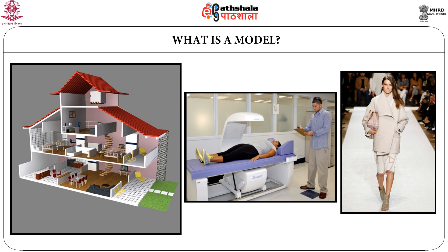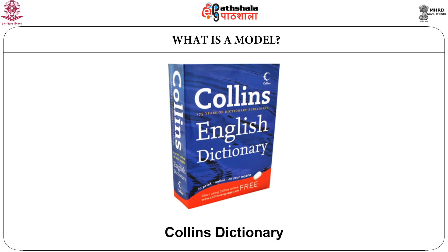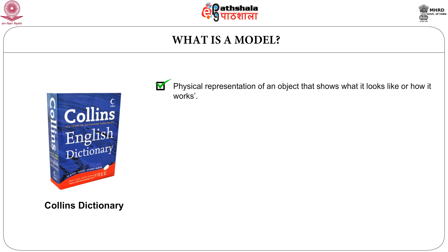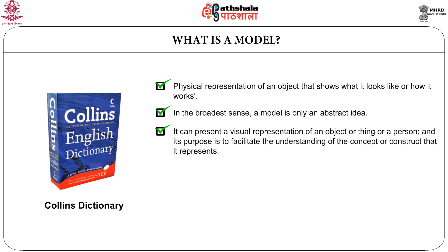Further, in a fashion show, a human model may parade on the ramp showing off different designs and creations of a fashion designer. However, we must not forget that a model is just a model — it is not the real thing. They are usually smaller in size and not up to standard scales. Models are arbitrary in nature and do not conform to any universally accepted norm. The Collins dictionary tells us that a model means a physical representation of an object that shows what it looks like or how it works. So in the broadest sense, a model is only an abstract idea — it can present a visual representation of an object or thing or person, and its purpose is to facilitate the understanding of the concept or construct it represents.